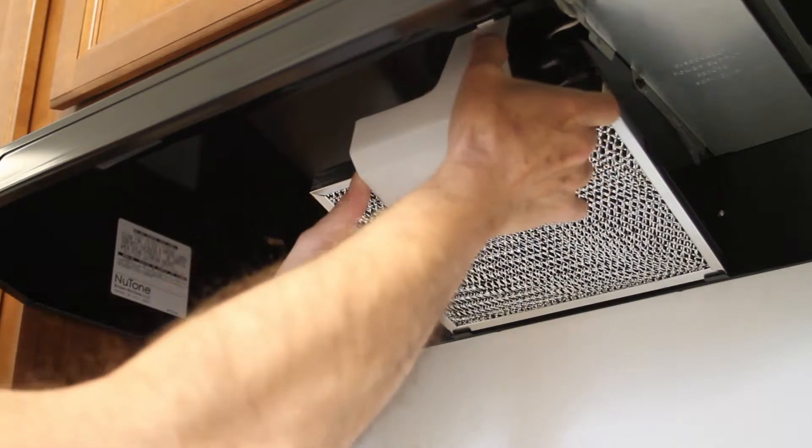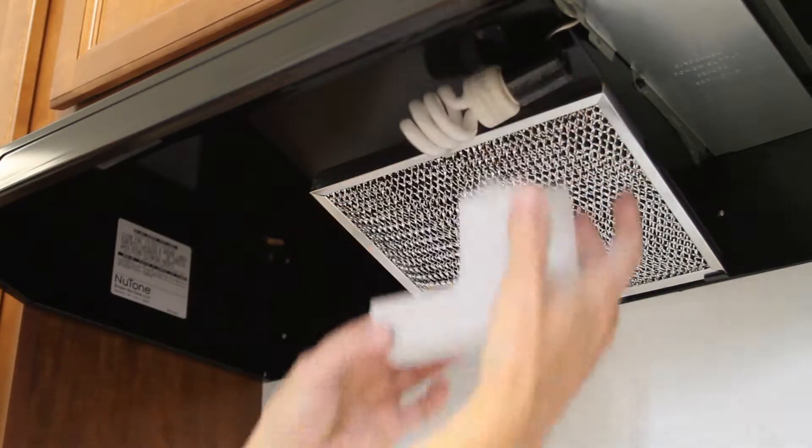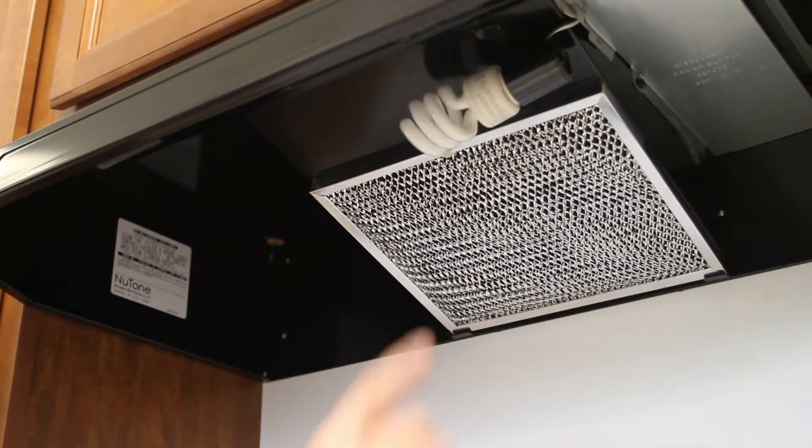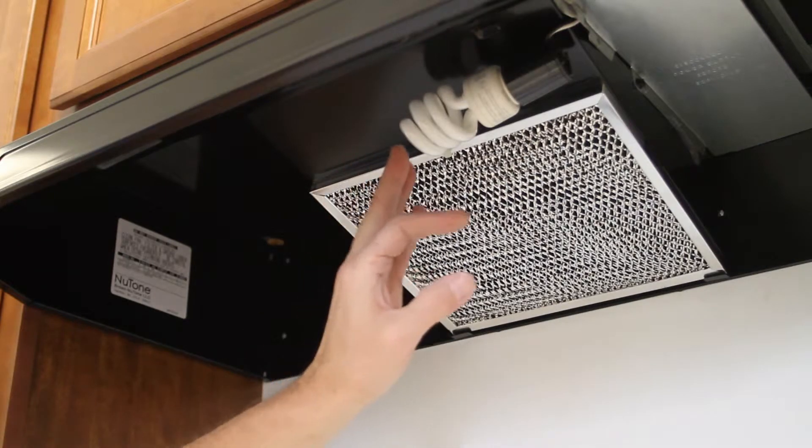First, to change the light bulb, you just squeeze on this cover and take it down. Those tabs fit in little slots and then the bulb.